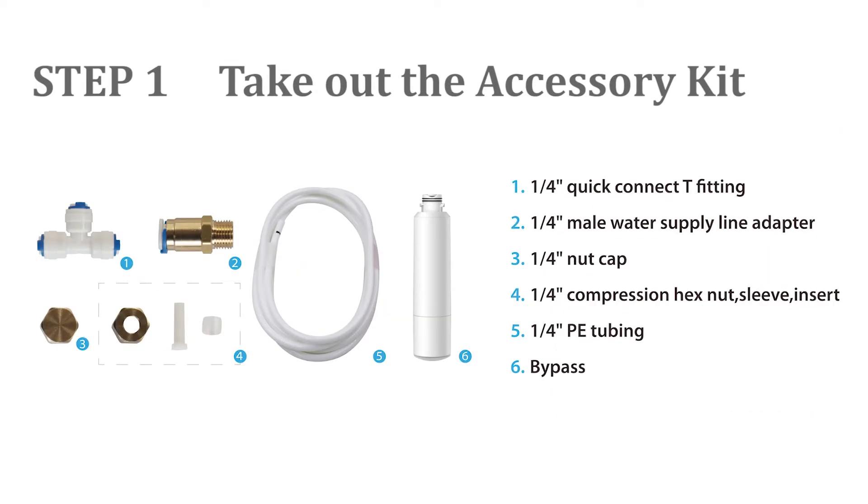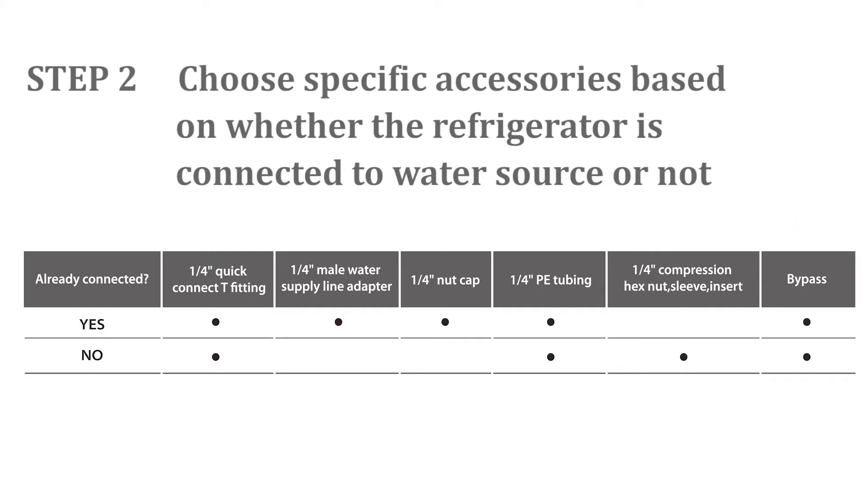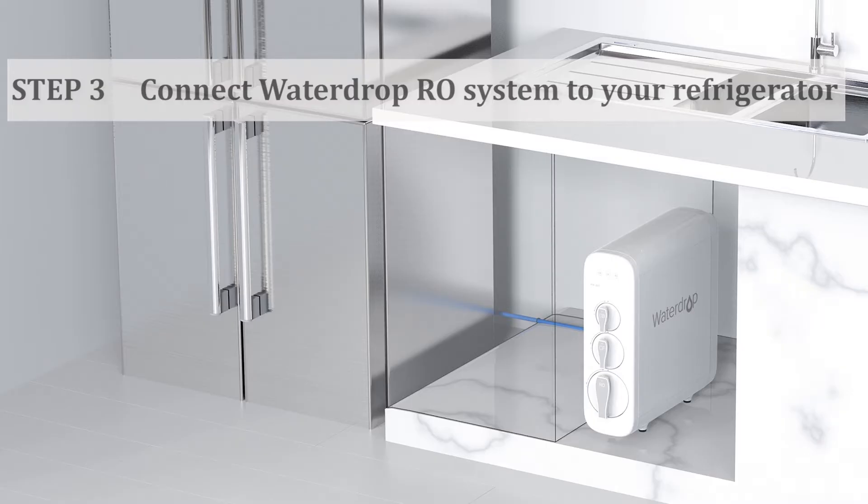Step 1: Take out the accessory kit. Step 2: Choose specific accessories based on whether the refrigerator is connected to water source or not. Step 3: Connect Waterdrop RO system to your refrigerator.